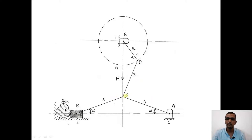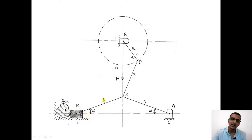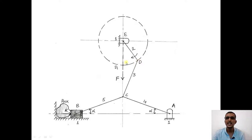The crank is connected to links four and five through link number three. Link number three connects to four and five through point C. Link four can oscillate with respect to point A, and its inclination with respect to horizontal is called alpha. Link number five is connected to a slider which can move back and forth. The inclination of link five with respect to the horizontal is also called alpha.